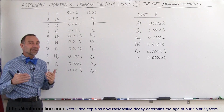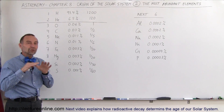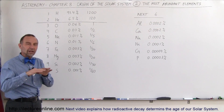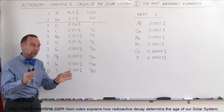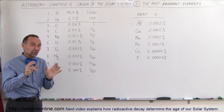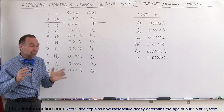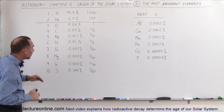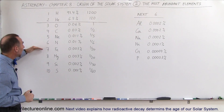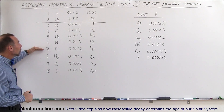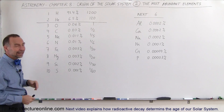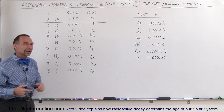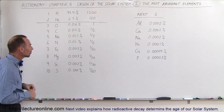We also realize that almost half the Earth is made out of iron — the core of the Earth, both the liquid and solid portions, is made out of iron. When you look at the data, iron is the seventh most abundant element in the universe, so again that should not be a big surprise.